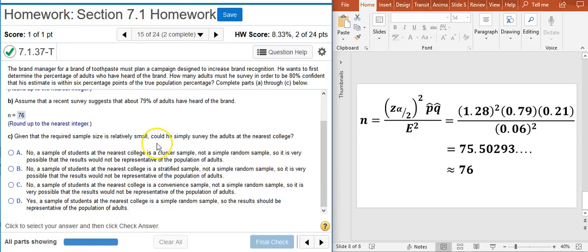And now the last part, Part C, asks given that the required sample size is relatively small, could he simply survey the adults at the nearest college? What kind of sample do you have when you sample what's nearby? I hope you said a convenient sample, because that's what we've got. And of course, convenient samples are biased samples, so we don't want to be sampling with that methodology.